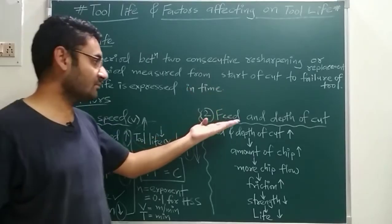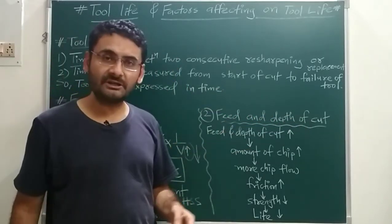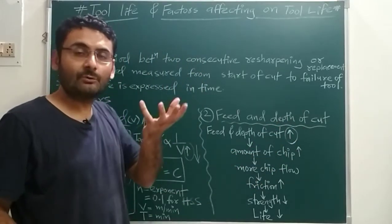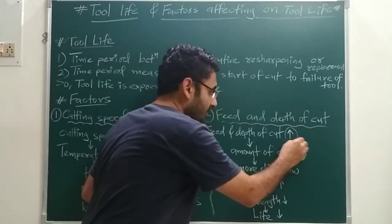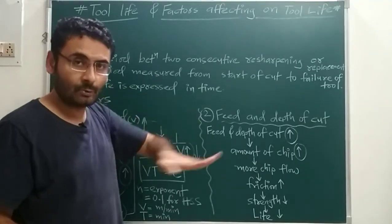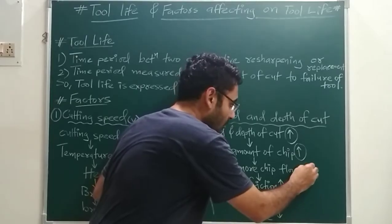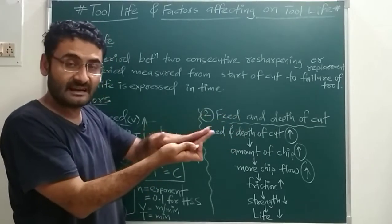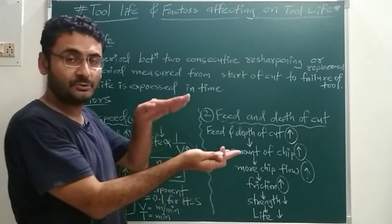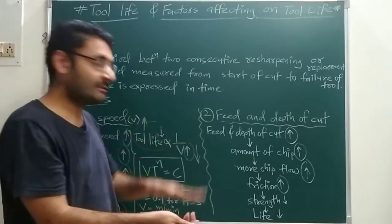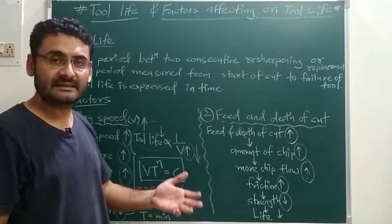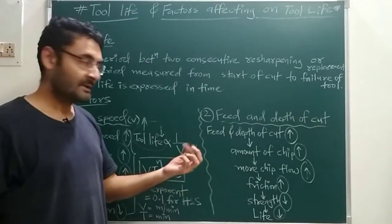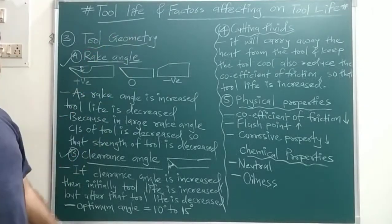The second factor affecting tool life is feed and depth of cut. In a lathe machine, if you increase the depth of cut or feed, more material is removed. More chips are produced and more chips flow from the surface of the tool. These chips create friction on the tool surface — friction is increased on the tool surface, which decreases the strength of the tool, causing it to break. So tool life is decreased. Feed and depth of cut are also inversely proportional to tool life.